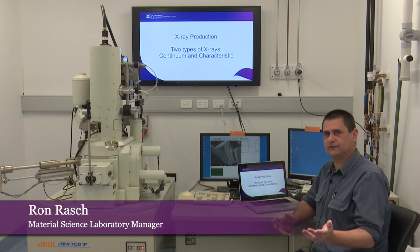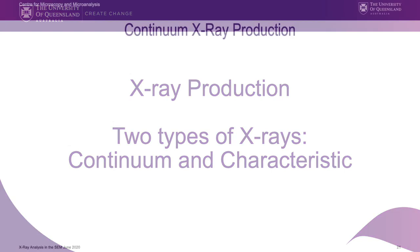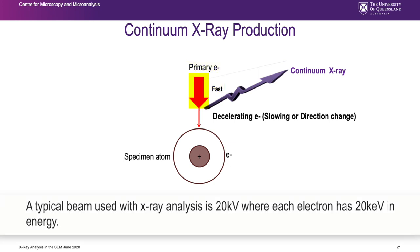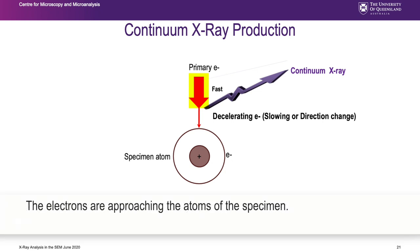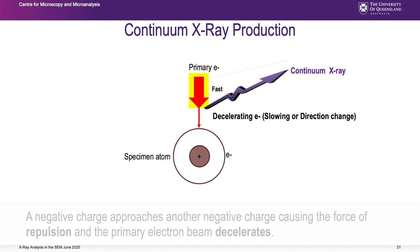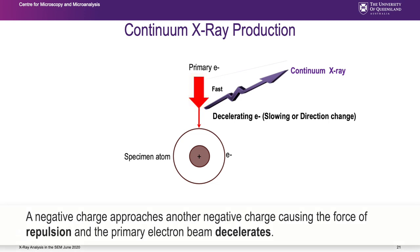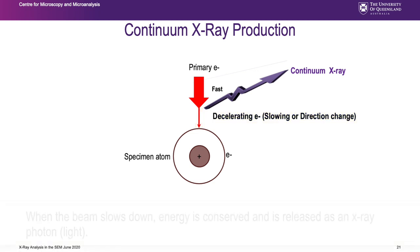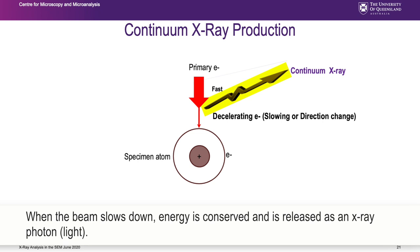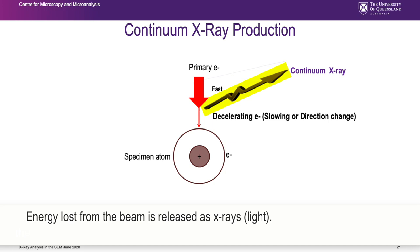Let's talk about X-rays. We have two types: continuum and characteristic. Consider an electron coming down from the SEM column - a typical beam might be 20 kV, so each electron has 20 keV in energy. That electron approaches the atoms of your specimen, which has an electron cloud around it. A negative charge approaching another negative charge causes repulsion, decelerating the primary beam electron. Energy is conserved, so when the beam slows down that energy is released as an X-ray photon - that's called a continuum X-ray.